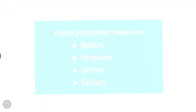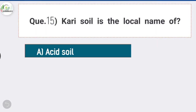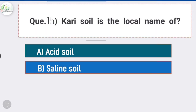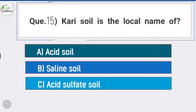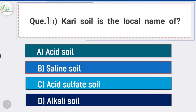Question number fifteen: curry soil is the local name of — answer is option C, acid sulfate soil. Curry soil is the local name of acid sulfate soil.